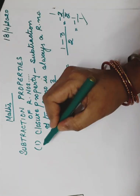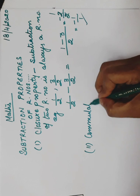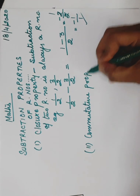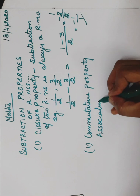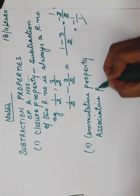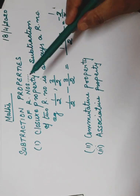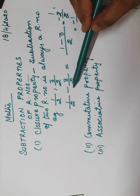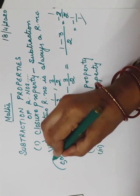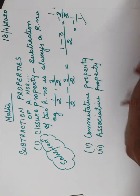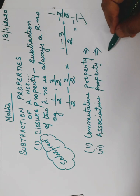All the properties that come under subtraction — closure property, second is commutative property, third is associative property — we have to consider all these in the subtraction of rational numbers. In the closure property, if we subtract two rational numbers the answer is a rational number, so this property is satisfied. But commutative property will not be satisfied, and similarly associative property will also not be satisfied.